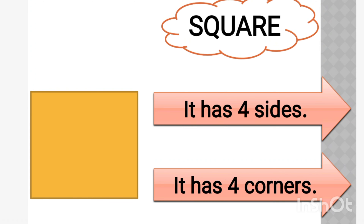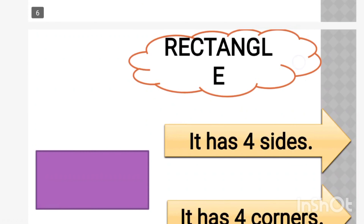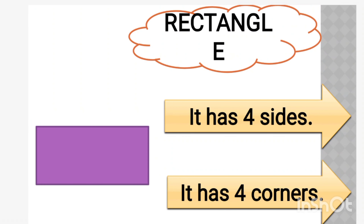Another shape given here is rectangle. In our daily life there are so many examples of rectangle, like our table, gate, blackboard, etc. And today we are going to learn some points about rectangle also.